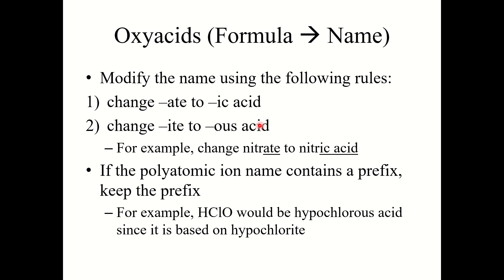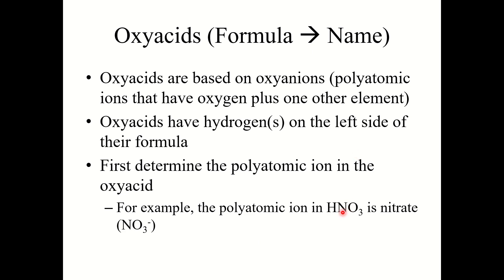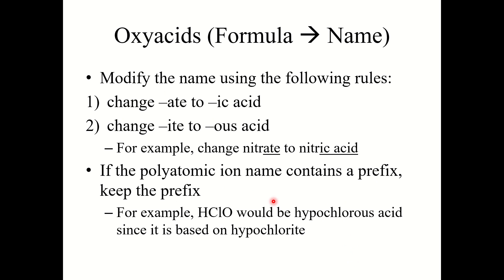So if I've got HNO3, NO3⁻ is nitrate — change nitrate to nitric and add acid: nitric acid. Now if that polyatomic ion name contains a prefix, you keep the prefix. For example, HClO: ClO⁻ is hypochlorite, so change -ite to -ous and add acid — HClO is hypochlorous acid.